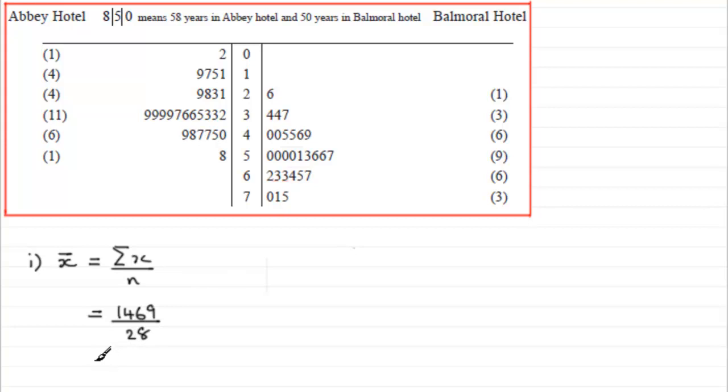And if you work that out, what you get is 52.4642 and so on. Let's round that to some appropriate degree of accuracy. Let's say one decimal place.